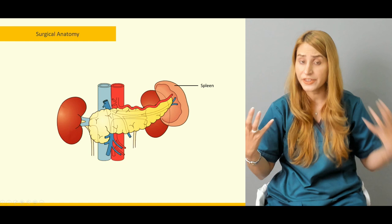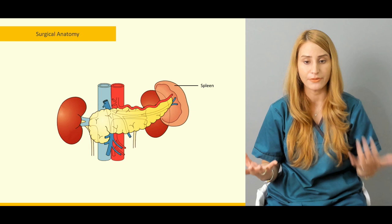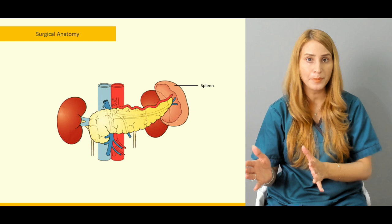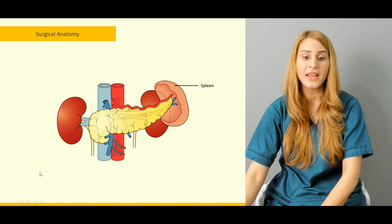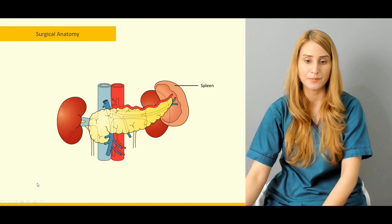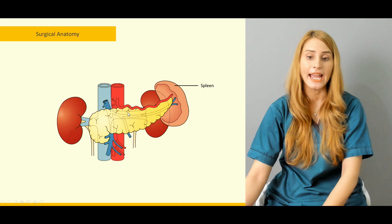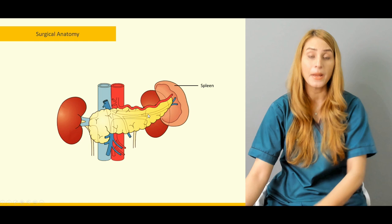The pancreas is divided into four parts: the head, neck, body, and tail, plus an additional part called the uncinate process. You can see the uncinate process projecting downward, then the head, the neck, the body across the middle, and the tail extending into the splenic hilum.